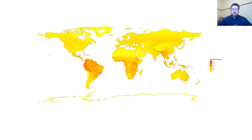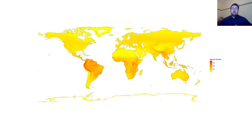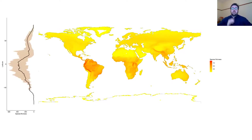I want to start with this slide showing a map that many of you have probably seen a version of at least, of the latitudinal diversity gradient of birds. One of the striking things immediately seen in this map is the peak of richness of bird diversity near the equator in the tropics.